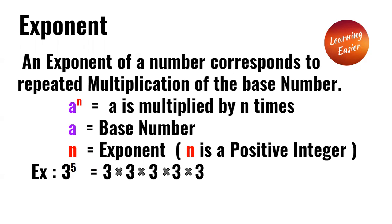Example: 3 to the power of 5 is the same thing as 3 multiplied by itself 5 times, or 3 times 3 times 3 times 3 times 3.